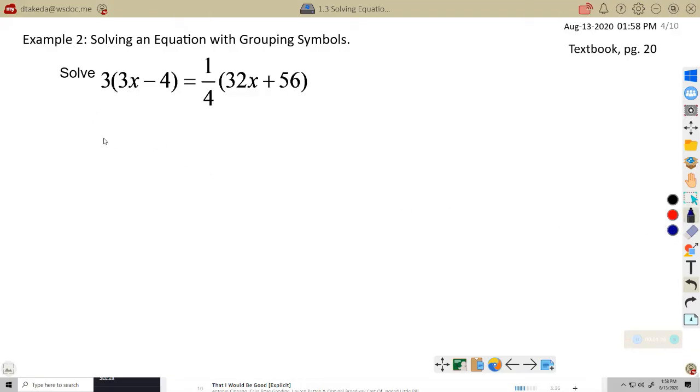3 times 3x is 9x. Minus 3 times 4 is 12. Multiplying by a fraction is easy. If you're multiplying a whole number times a fraction, it really means to multiply by the top and divide by the bottom in any order. So really, this just says 32 times 1 divided by 4. That's 8x. And this is 56 times 1, which is 56, divided by 4. So 4 goes into 5 one time with 1 left over. So 16. So this would be 14.